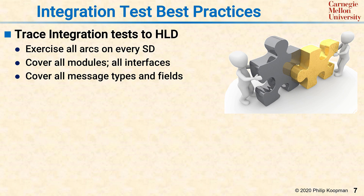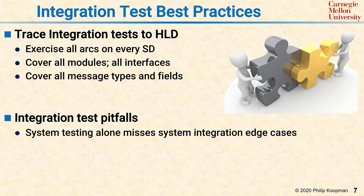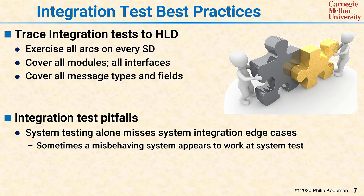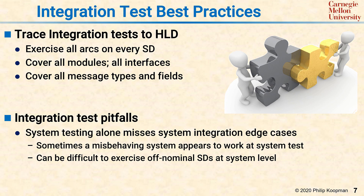There are two main integration testing pitfalls. First, system testing alone misses system integration edge cases. Sometimes a misbehaving system appears to work just fine, but the internal logic isn't quite right, and there's some specific edge case situation that it will not handle as intended because it was just getting lucky in the common case. Also, it can be difficult to exercise off-nominal sequence diagrams at a system level — there are some tests which are very difficult to reproduce with a physical system or downright dangerous. Integration testing helps you cover all the fine-grained interactions to make sure not only is the system working, but it's working the way you thought it was supposed to be working.